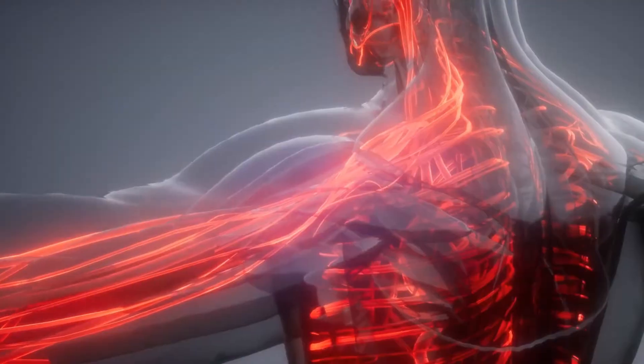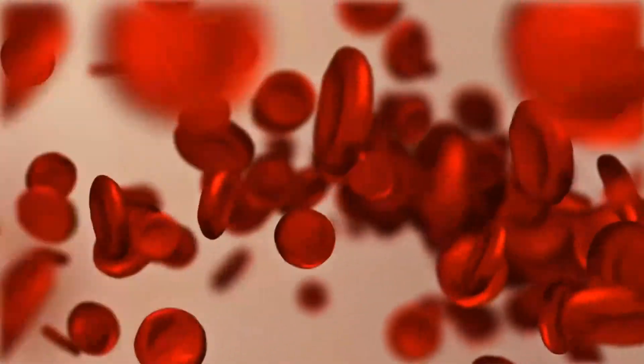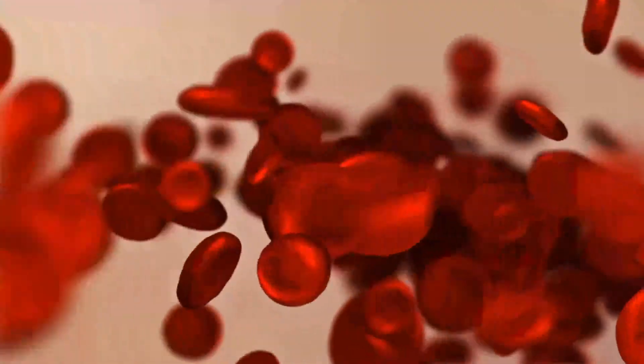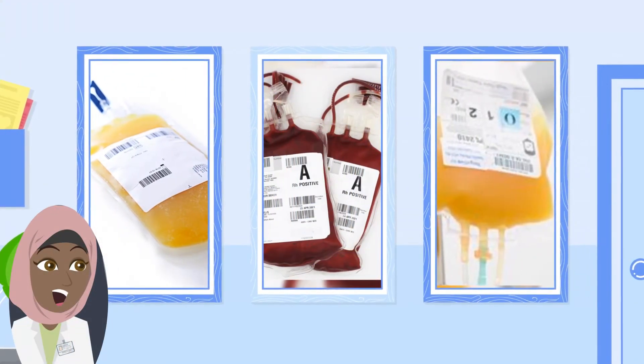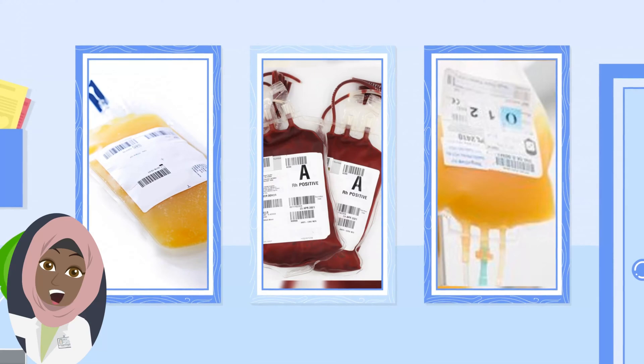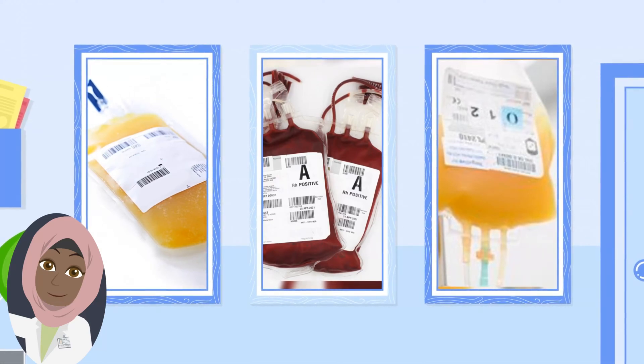The liquid portion is known as plasma, while the solid portion consists of red blood cells and platelets. Consequently, there are three main types of blood transfusions: plasma transfusions, red blood cell transfusions, and platelet cell transfusions.